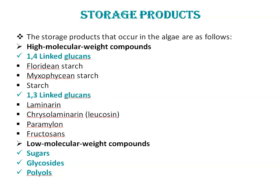The second type of storage products are low molecular weight compounds like sugars, glycosides, and polyols. In chlorophyta and euglenophyceae, sucrose is formed as a reserve food. Glycosides include glycerol glycosides and floridoside. Polyols include mannitol, occurring in rhodophyta and phaeophyceae. Thank you.